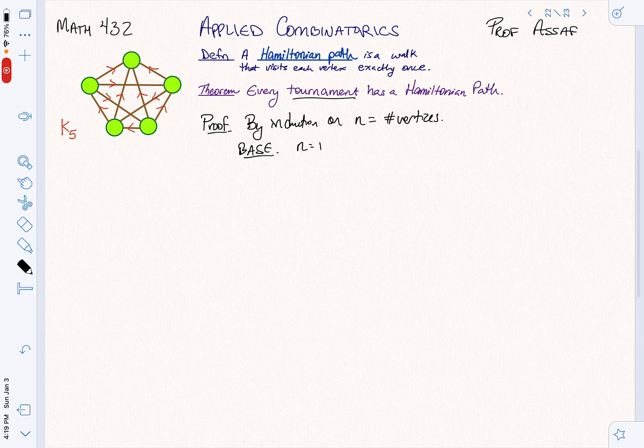We always want to do the base case. In this case, N equals 1 is our base case. Here is K1, a single vertex. This is vacuously true that there is a Hamiltonian path. Before you take any steps, you've visited every vertex. Let's do another case, not because we need to, just to see it in action. If we have K2, no matter which way we direct this edge, we can take the step from the source to the sink. We can step along the edge, and that'll give us a Hamiltonian path. Our base case is done.